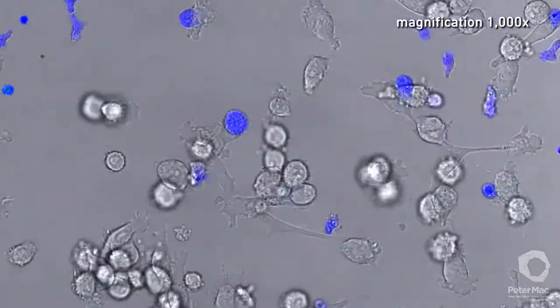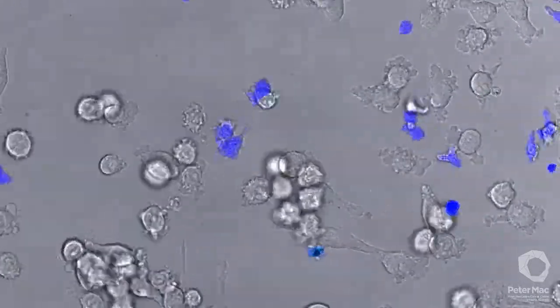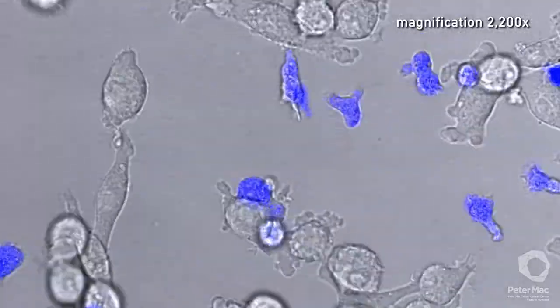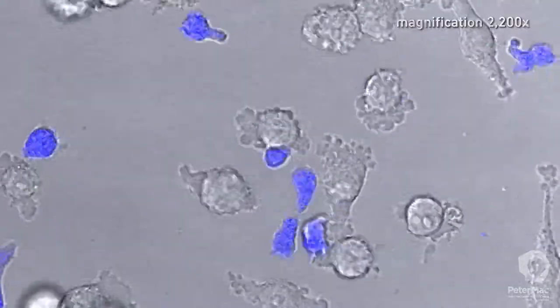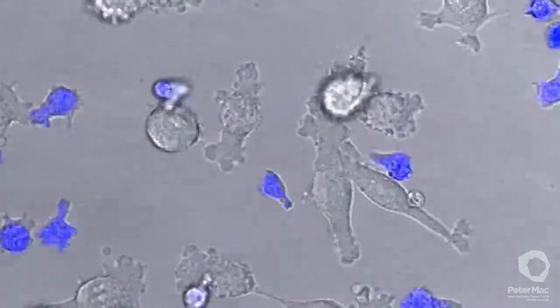Here in blue we can see some killer T cells through the microscope. Killer T cells actively patrol the body searching for anything foreign that shouldn't be there, such as infection and other diseases.